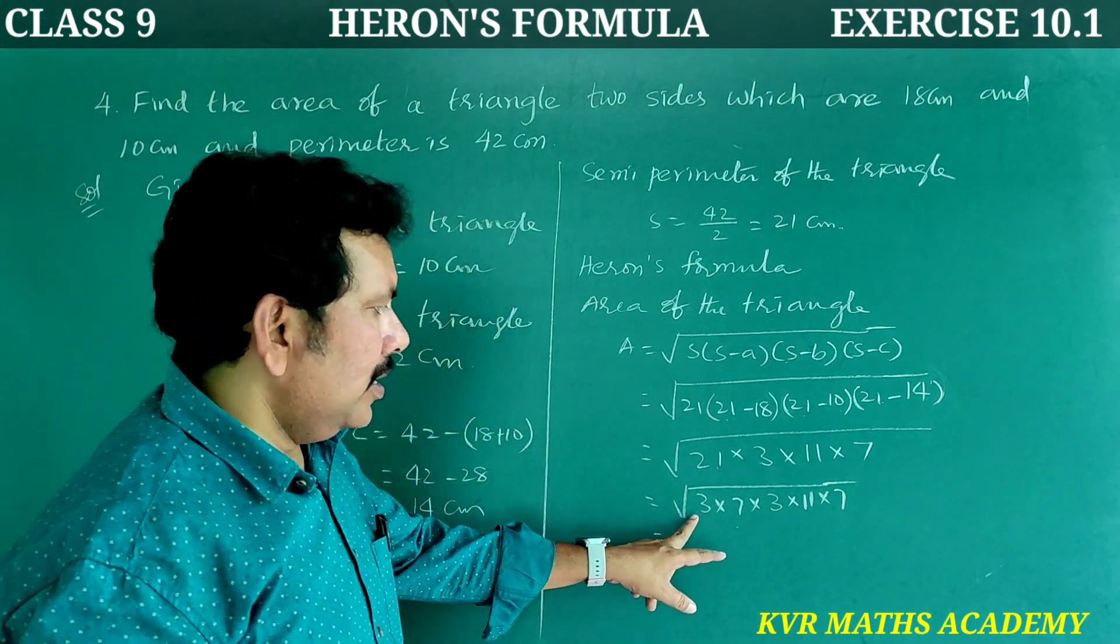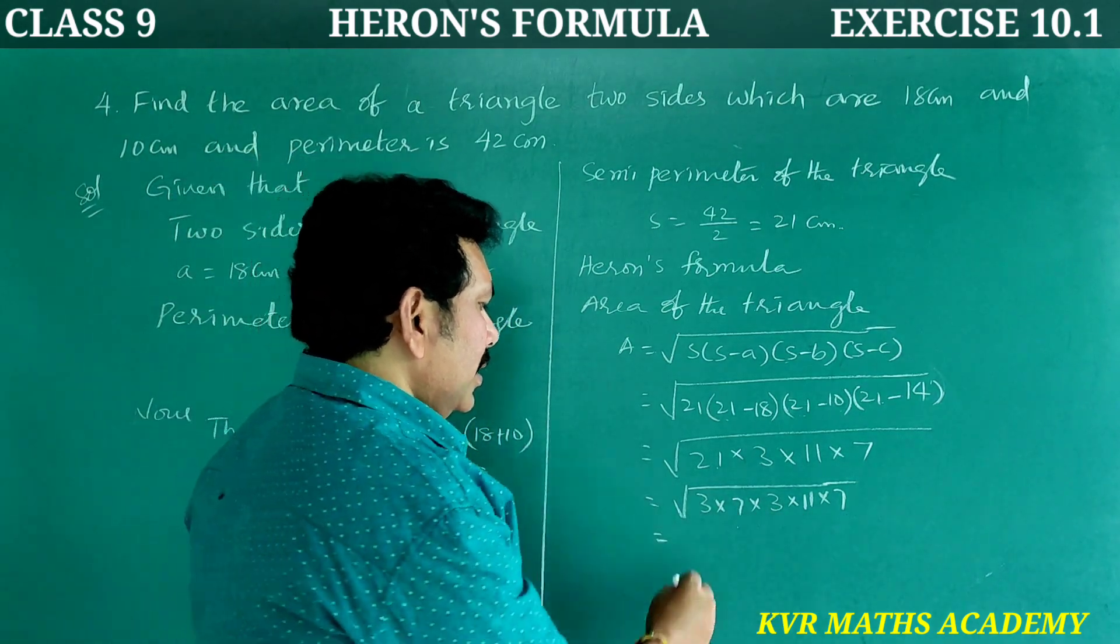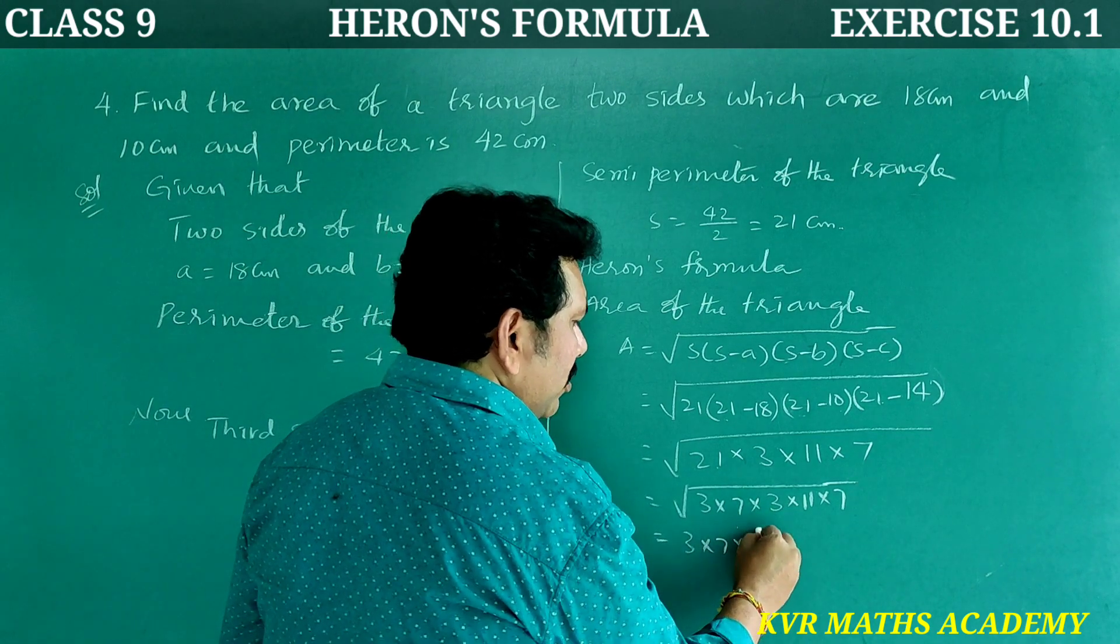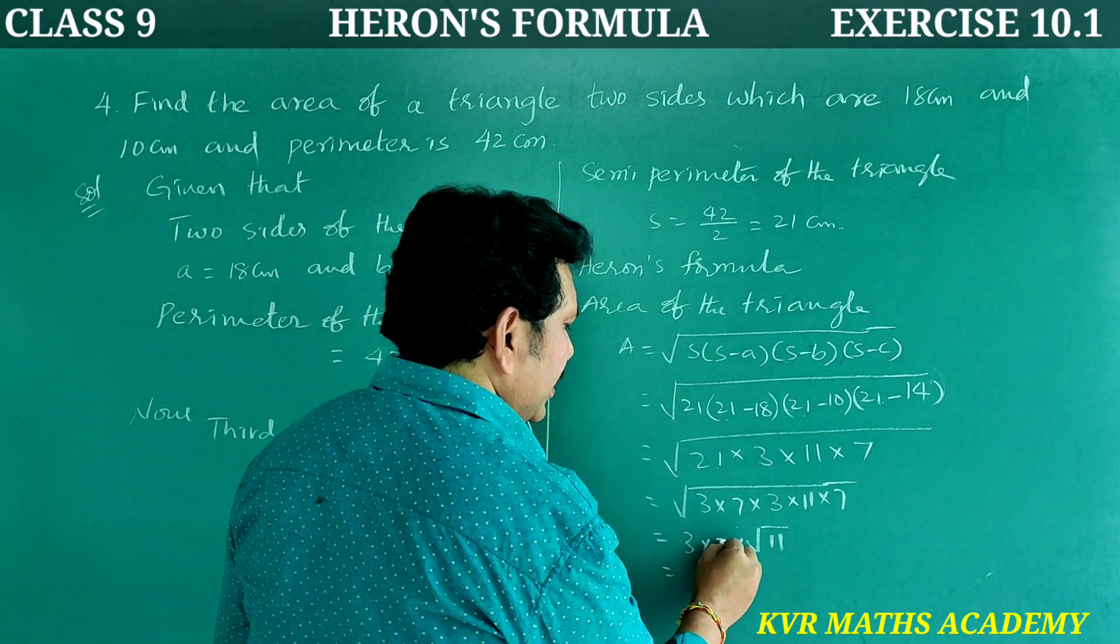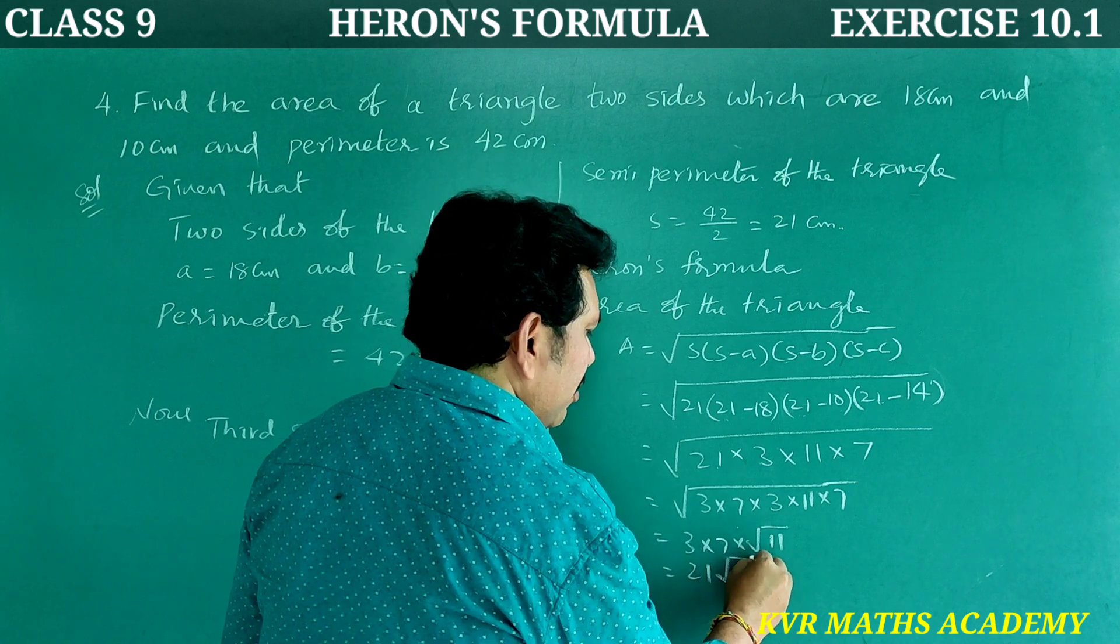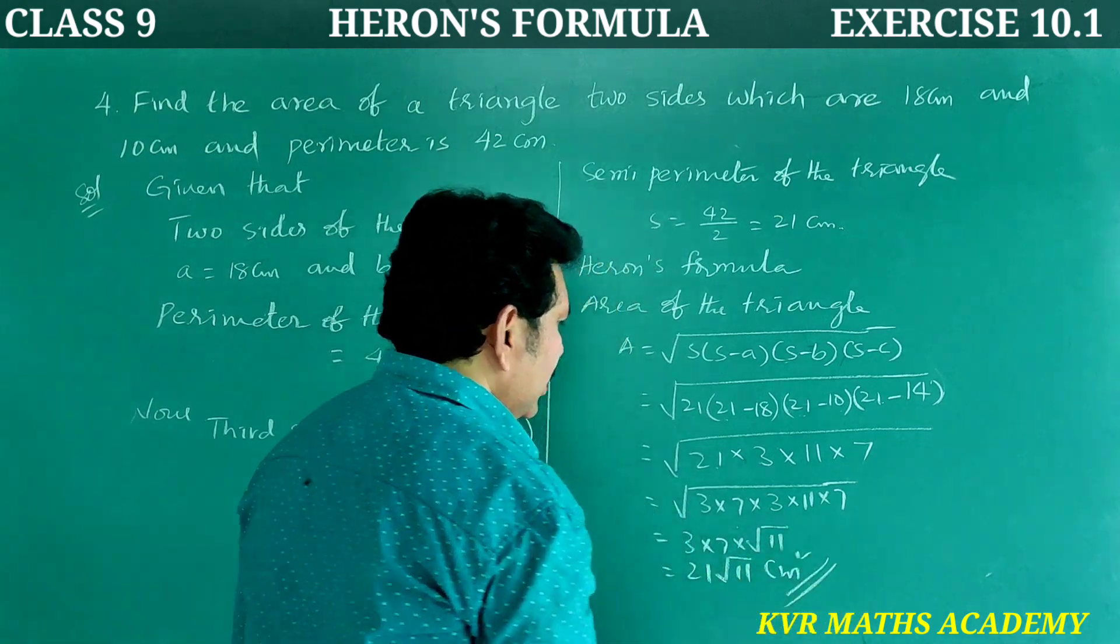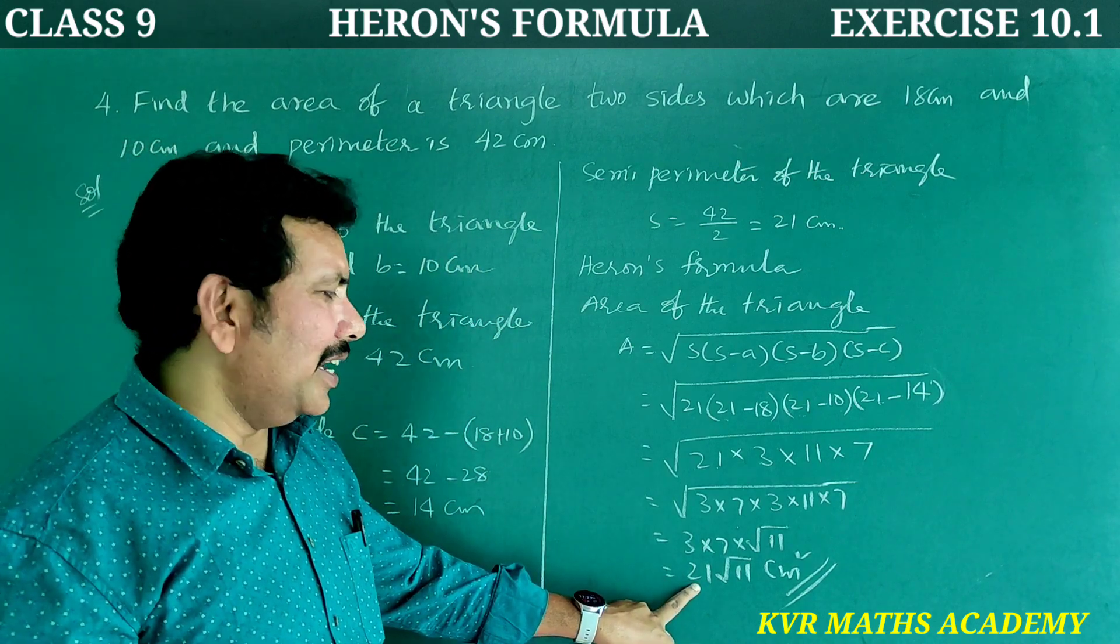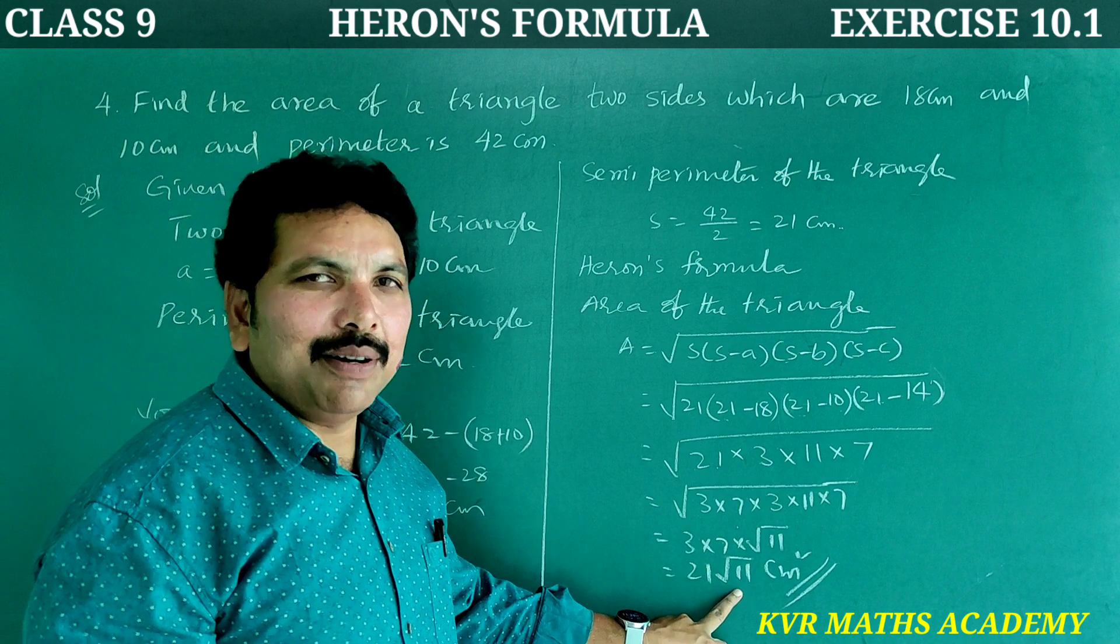3, 7, 2 times 1, 3 into 7 into 11, so root 11. That is equal to 3 times 7 is 21, 21 root 11 centimeter square. Area of the triangle. Area of the given triangle is 21 root 11 centimeter square. Have you understood clearly?